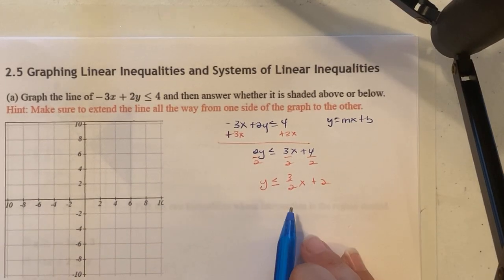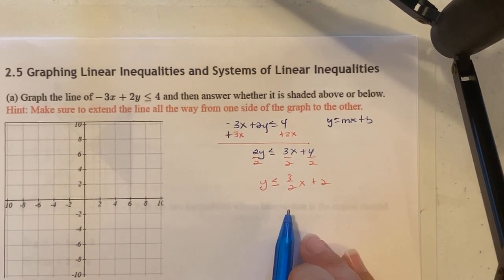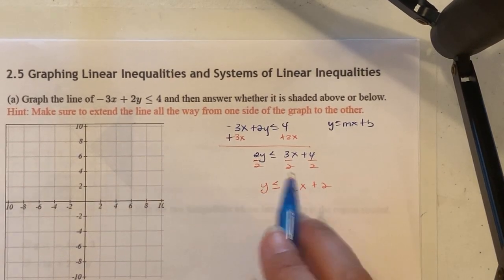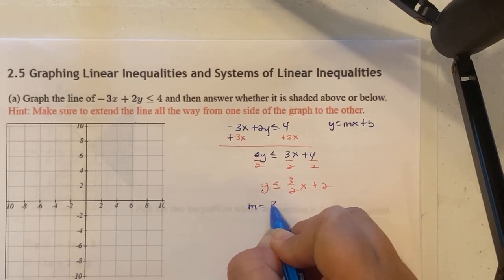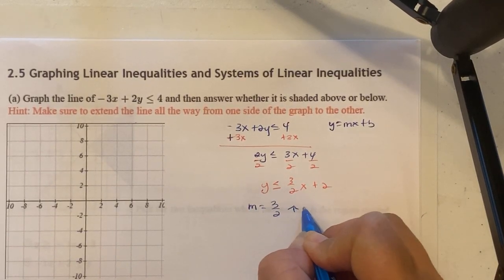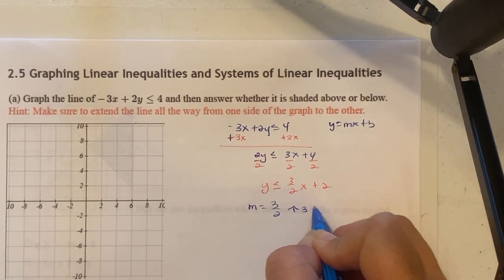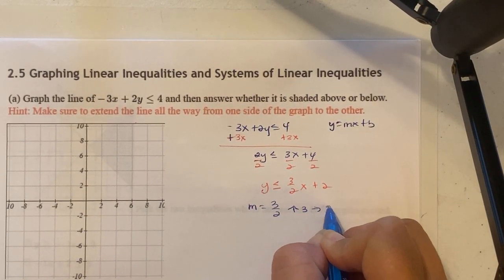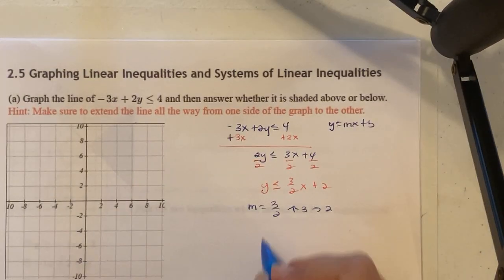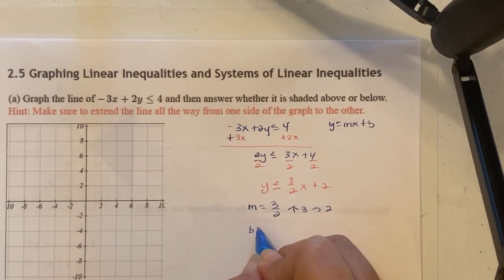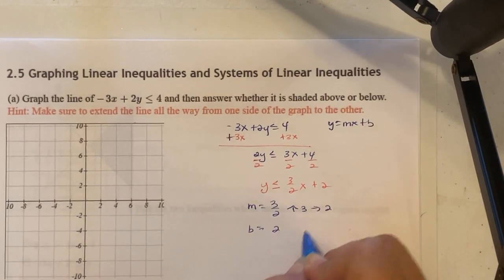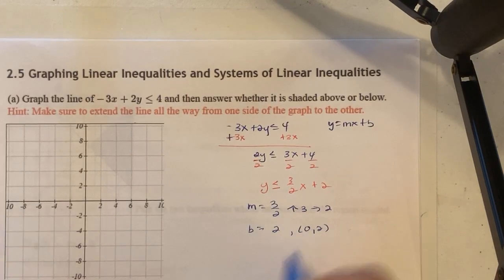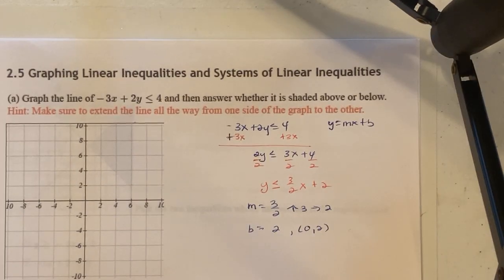Referring to y equals mx plus b: 3 halves is our m value. Our slope is 3 over 2, meaning we rise 3 and run 2. Our b value is positive 2, so we start at the point (0, 2).